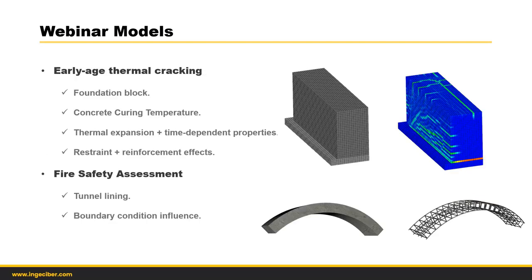We are going to see today two examples. The first example is the FEA thermal cracking on a foundation block, as you can see here. In this foundation block, we'll have the concrete curing temperature, the heat that is generated by concrete maturing, the thermal expansion of this concrete block, plus time-dependent properties. The cracking stress will vary with time, and of course the restraint and reinforcement effects on crack patterns.